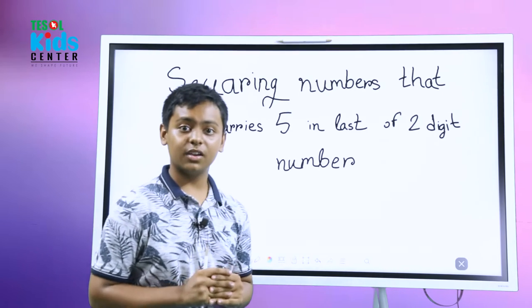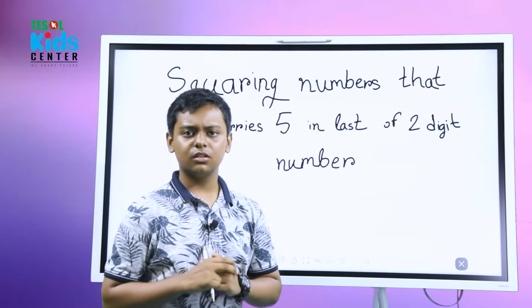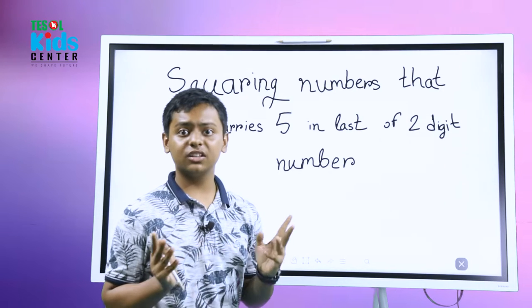Squaring numbers that carry five in the last of two digit number - it's tricky, you know, it's very hard. So how are we going to do that?